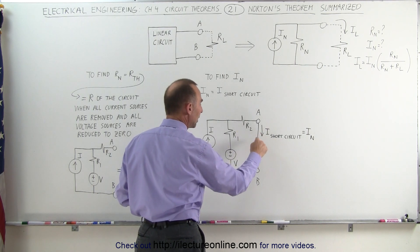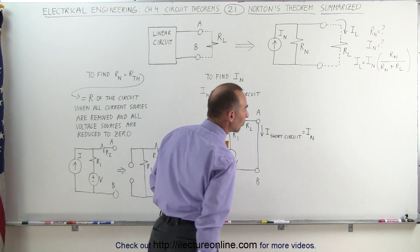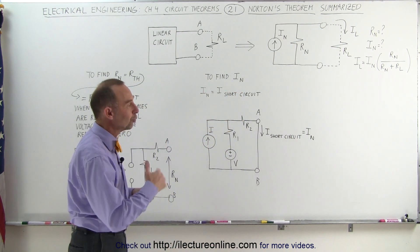We then figure out what the current would be through that short, and that current, the short current, will then equal the resistance or called, I should say, the Norton current.